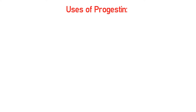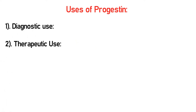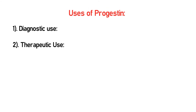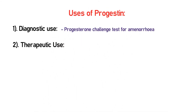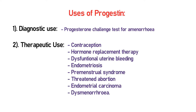Now let's discuss the uses of progestins. The uses are divided into two types: diagnostic use and therapeutic use. In diagnostic use, the progesterone challenge test for amenorrhea is performed. Therapeutic uses include contraception, hormonal replacement therapy, dysfunctional uterine bleeding, endometriosis, premenstrual syndrome, threatened abortion, endometrial carcinoma, and dysmenorrhea.